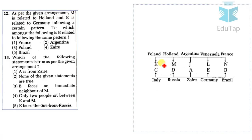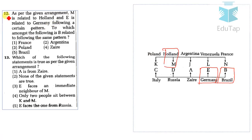Question 12: M is related to Holland, E is related to Germany — following the same pattern, B is related to Brazil. The answer for question 12 is option 5: Brazil. Question 13 asks which statement is true: A is from Zaire, which is confirmed in our arrangement. The answer for question 13 is option 1.